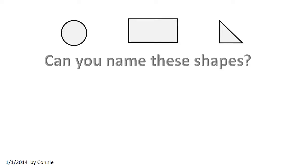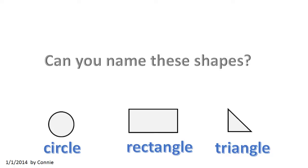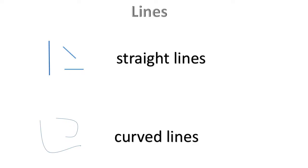Can you name these shapes? Circle. Rectangle. Triangle. Lines. Straight lines. Curved lines.